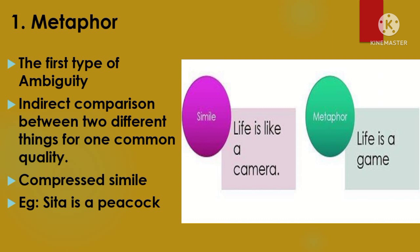We are now going to discuss the seven types of ambiguity stated by William Empson. According to Empson, the first type of ambiguity is metaphor. Metaphor is the indirect comparison between two different things for one common quality. Metaphor is also known as a compressed simile — because when you expand it, it takes the form of a simile, which is a natural or direct form of comparison. For example, 'Sita is a peacock' is a metaphor, because it indirectly tells us that Sita is as beautiful as a peacock.